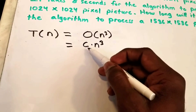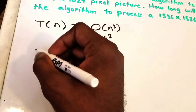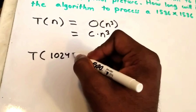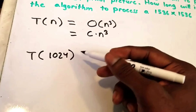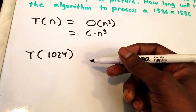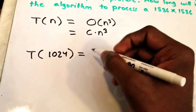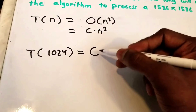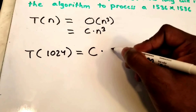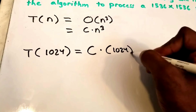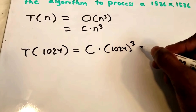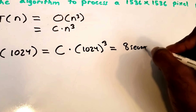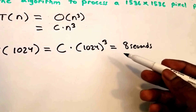A 1024 by 1024 is an n by n pixel picture, so our n is 1024. We need to solve for our constant c. Our equation looks like this: t(1024) = c × 1024³, and this equals 8 seconds according to the problem.